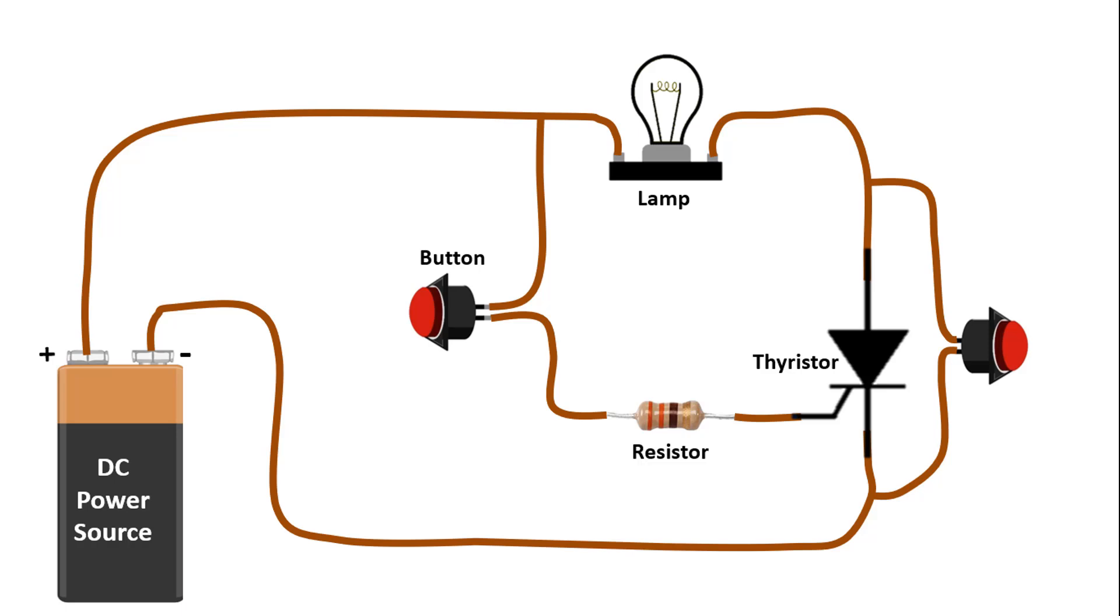Of course, we gave an example of lamp control here. But, instead of the lamp, the motor or other circuit element can also be controlled. This is how the thyristor's principle works.